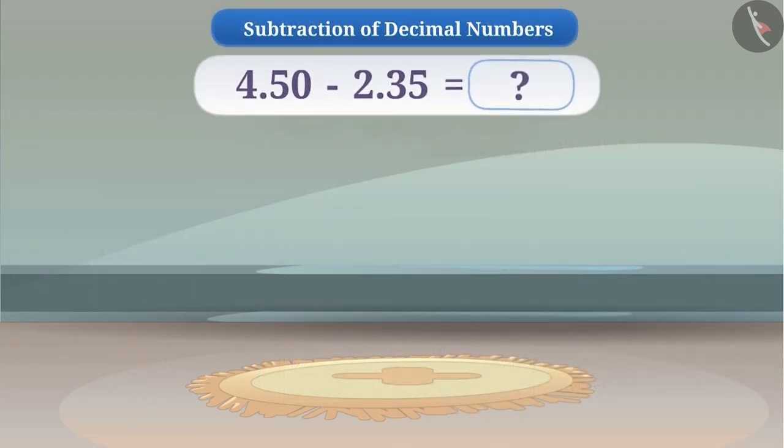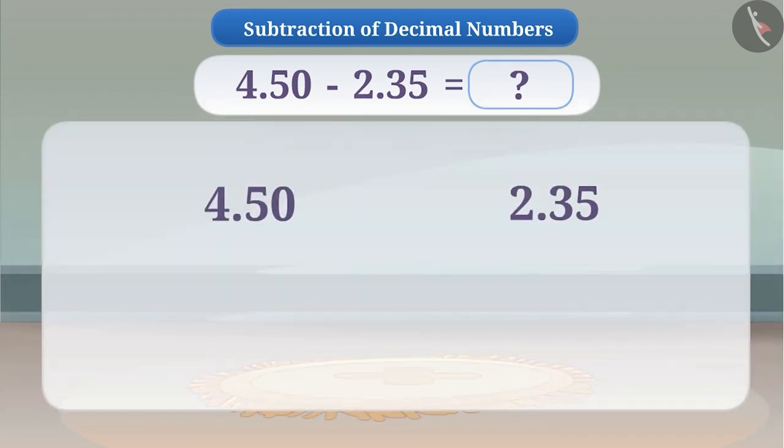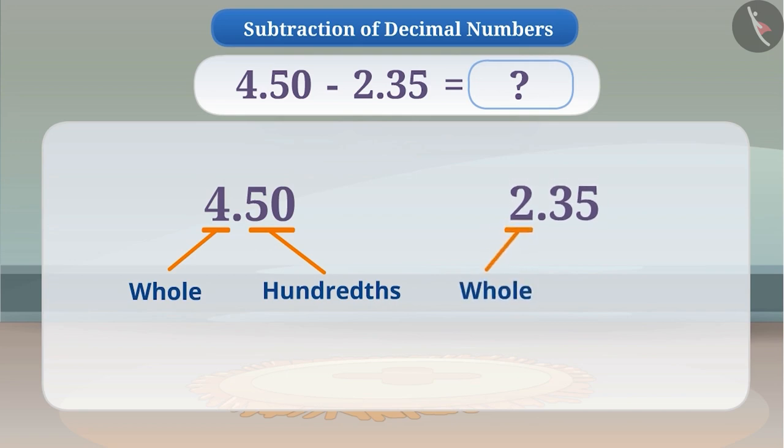We need to find what will be the value when 2.35 is subtracted from 4.50. So, let's solve it. We already know that any decimal number has a whole part to the left side of the decimal point and a part of the whole to the right side of the decimal point. For example, in 4.50, 4 is the whole number and 50 is the hundredths. Similarly, in 2.35, 2 is the whole number and 35 is the hundredths.